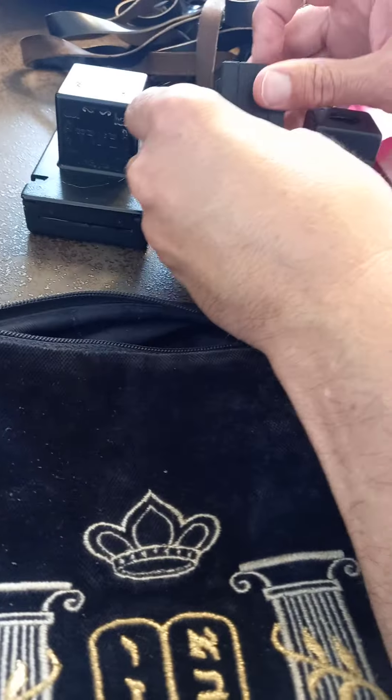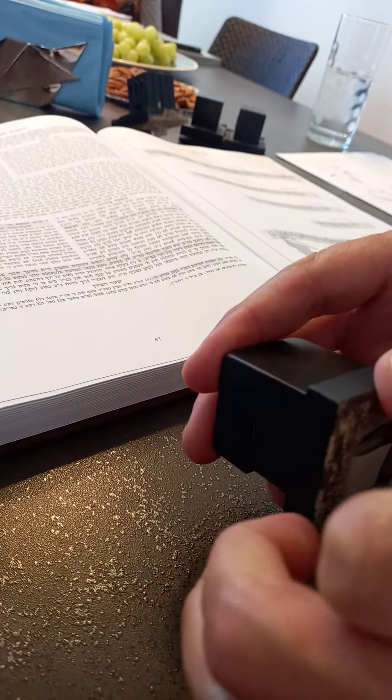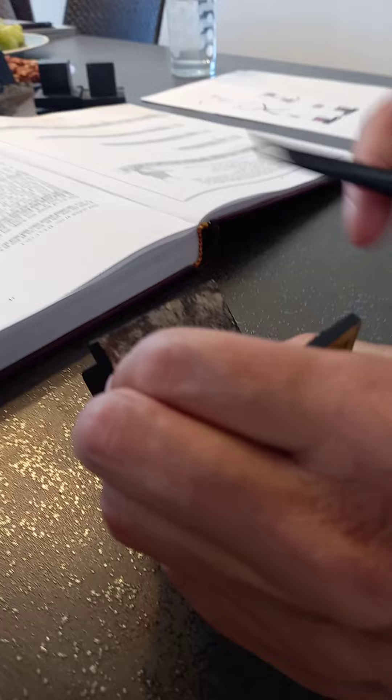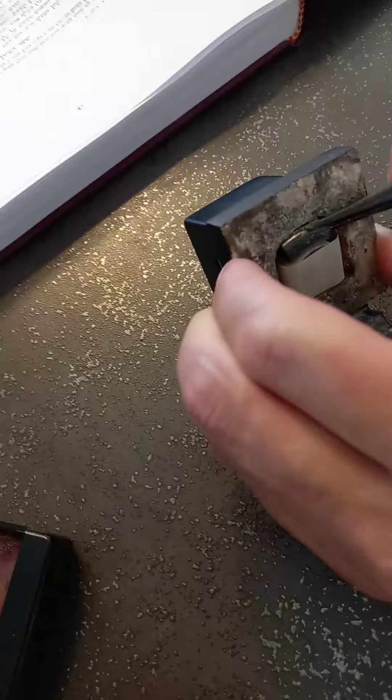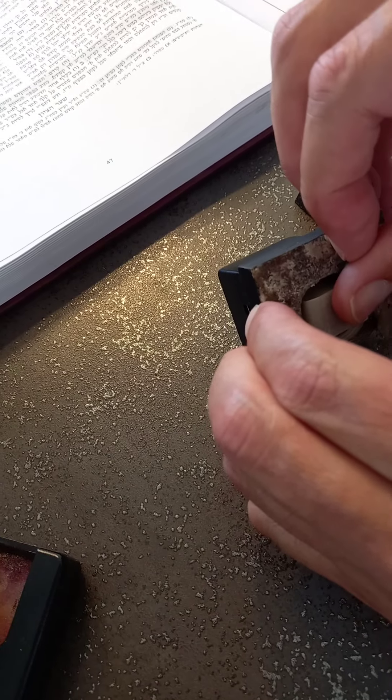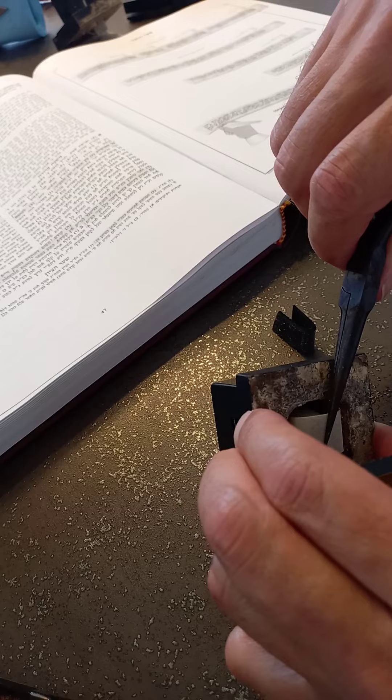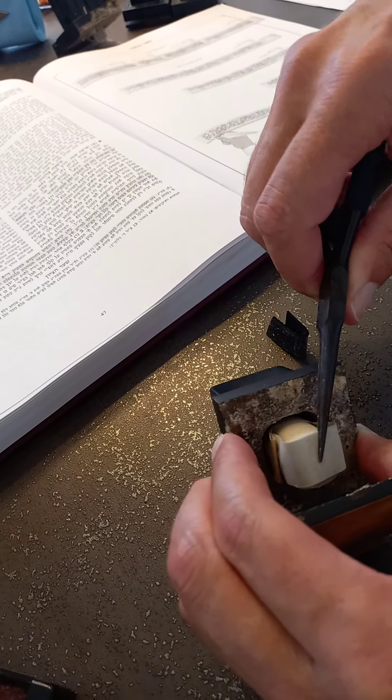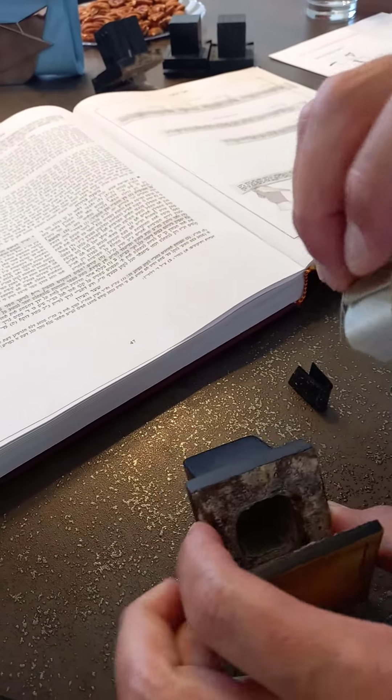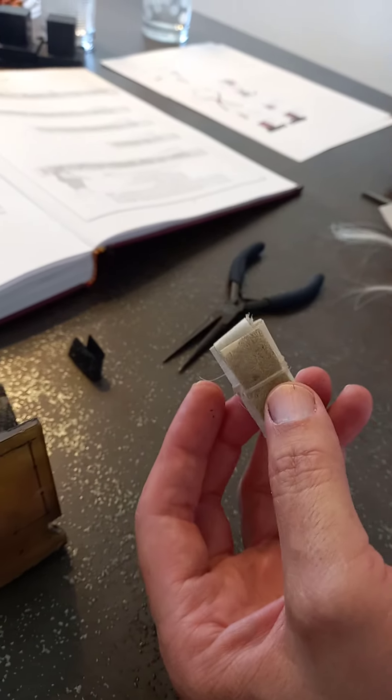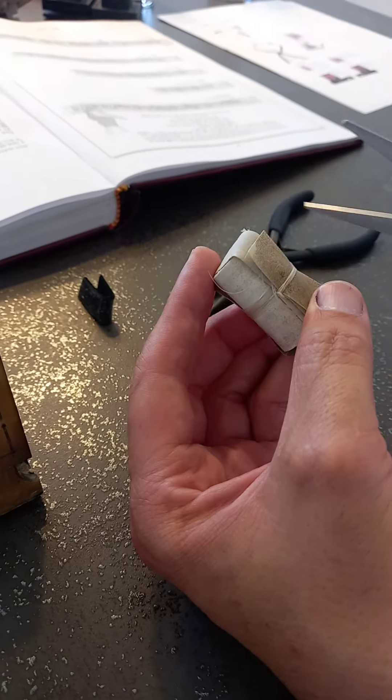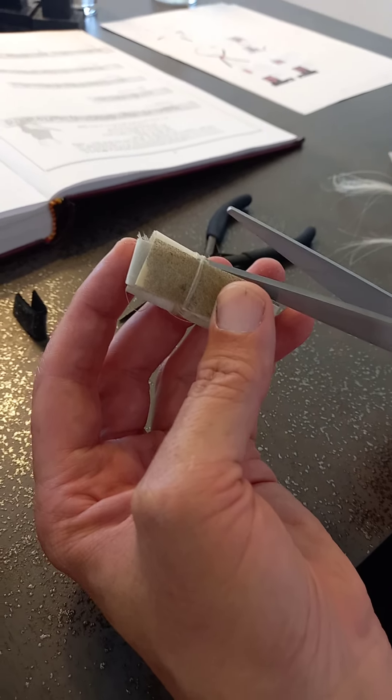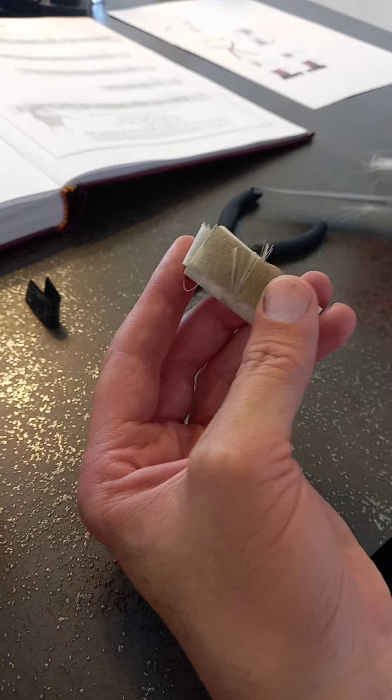Eli come closer so you can see. We'll start with Shel Yad, it's a little easier to take off. As you can see in here, there's just some parchment, some Retsua that is put in there just to tether it in place. Once we take that out, let's see now, I'll take this out gently.